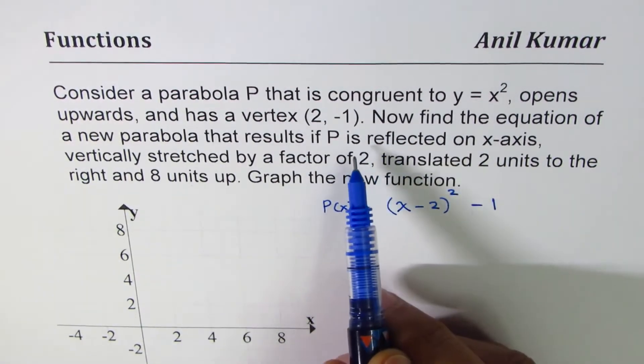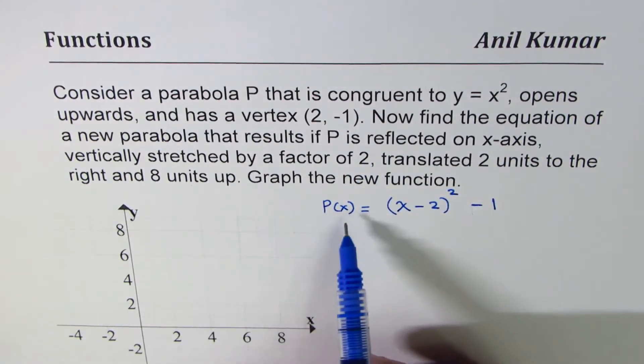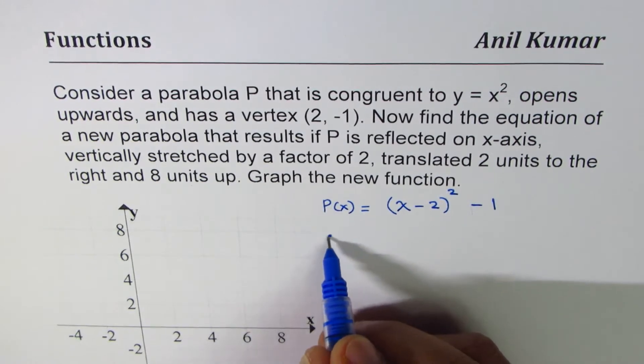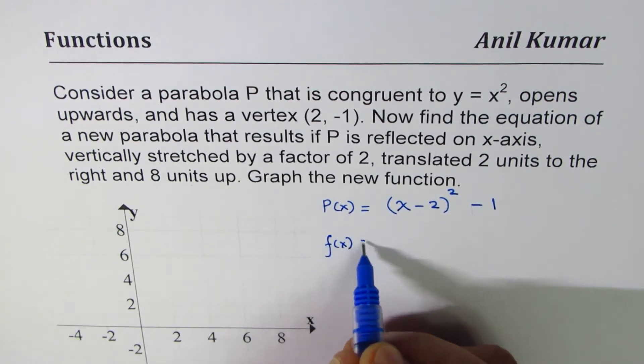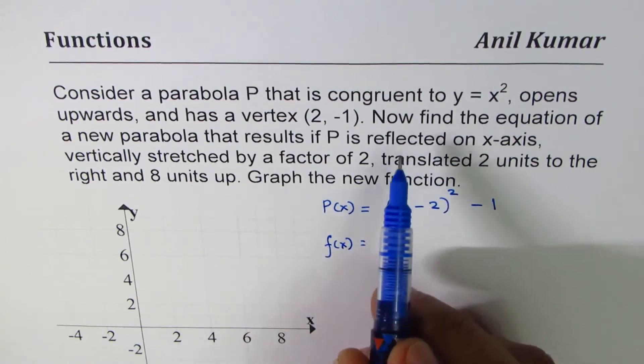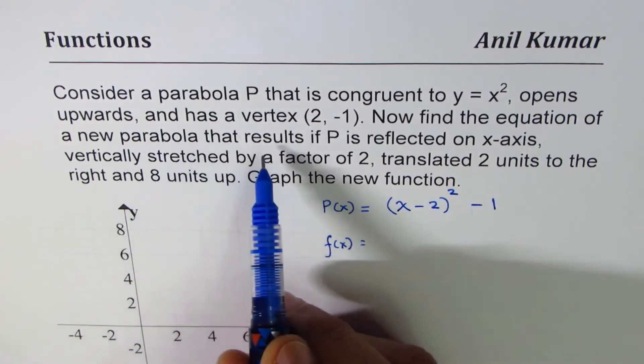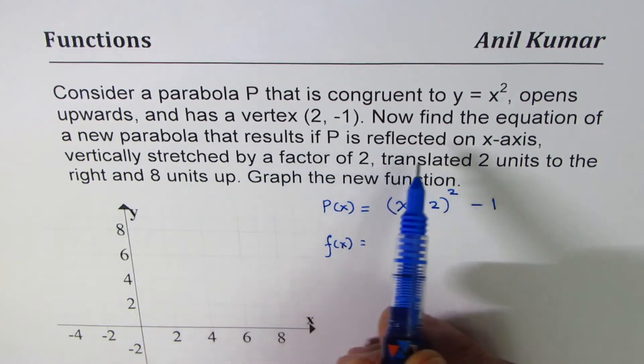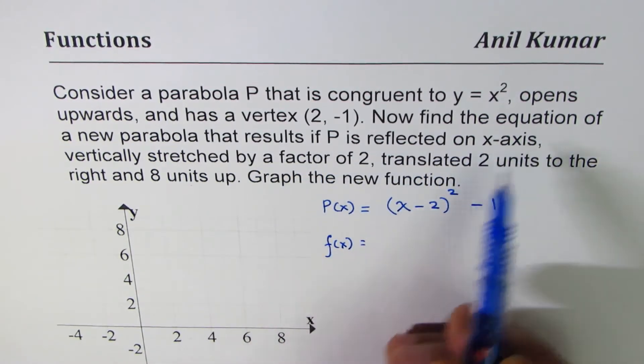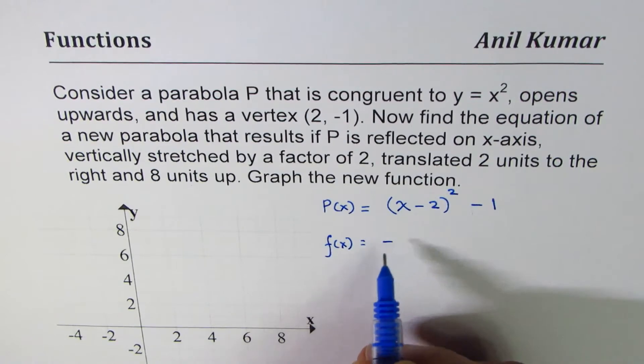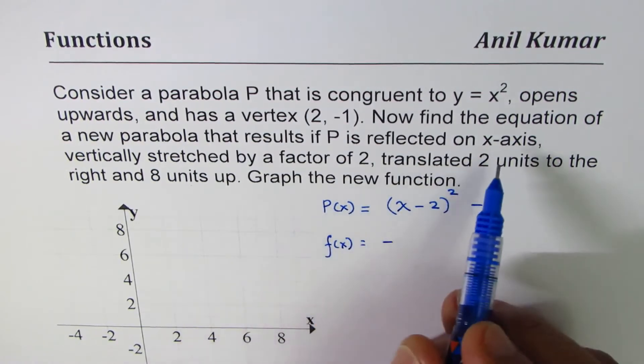And now let's look into the transformation which it goes through. So the transformed function f(x) is actually transformed P(x). Now find the equation of new parabola that results if P is reflected on x-axis.